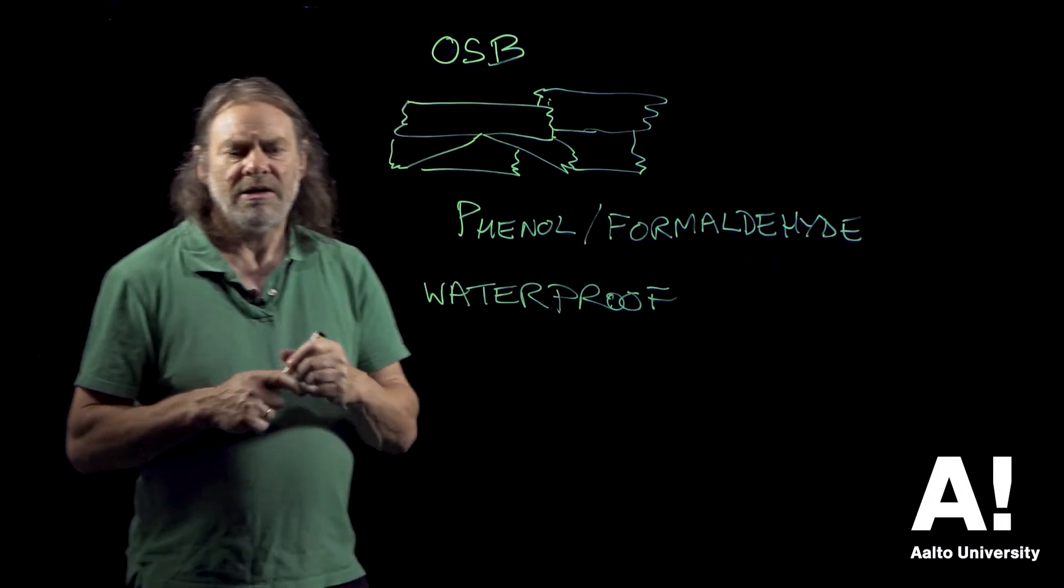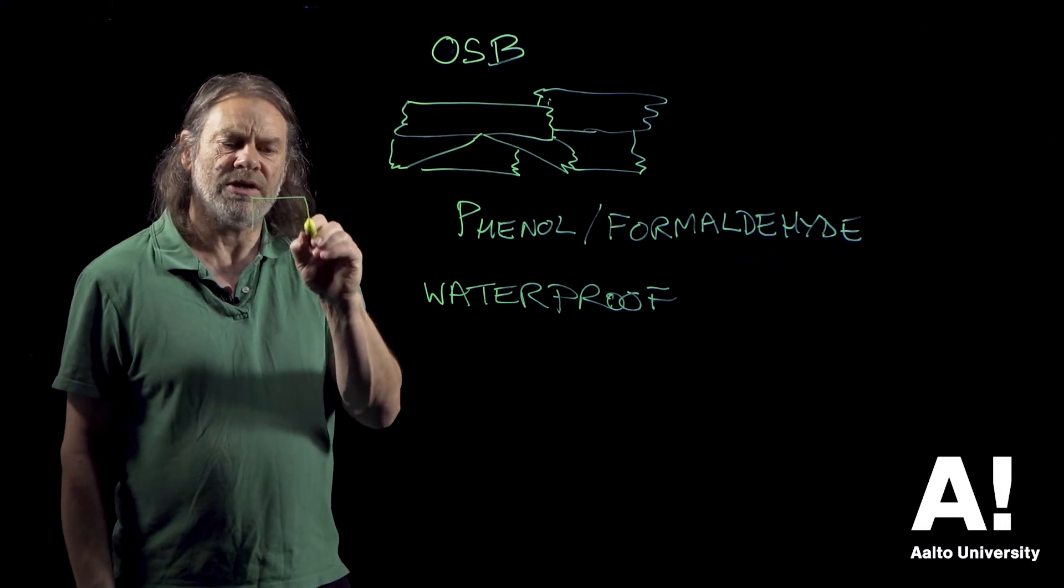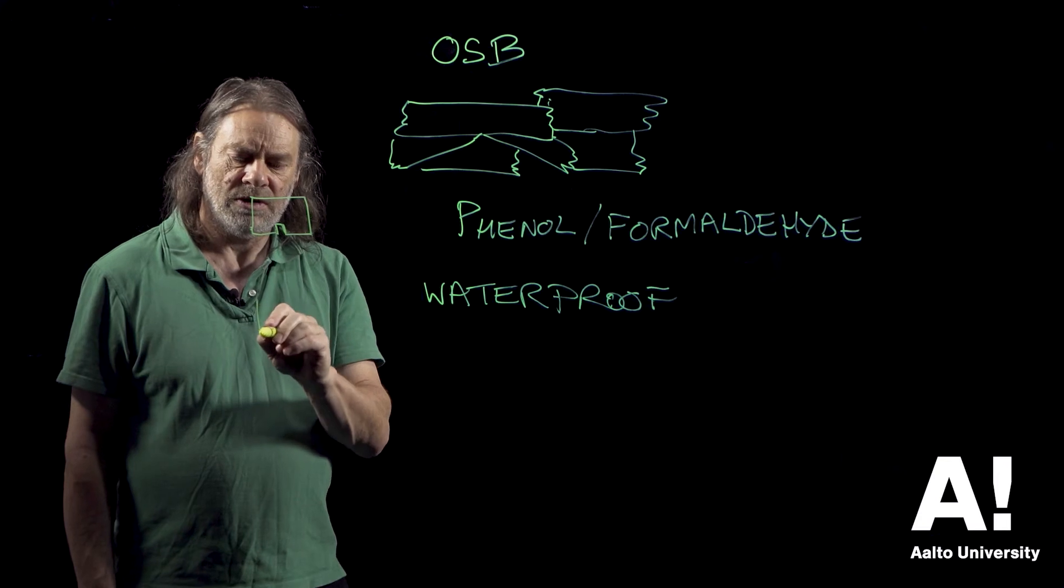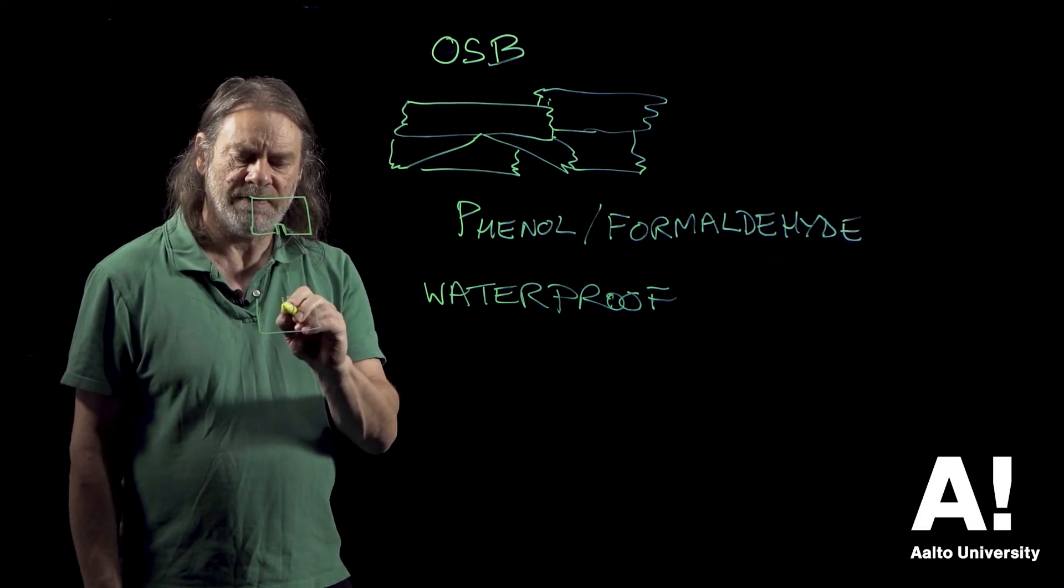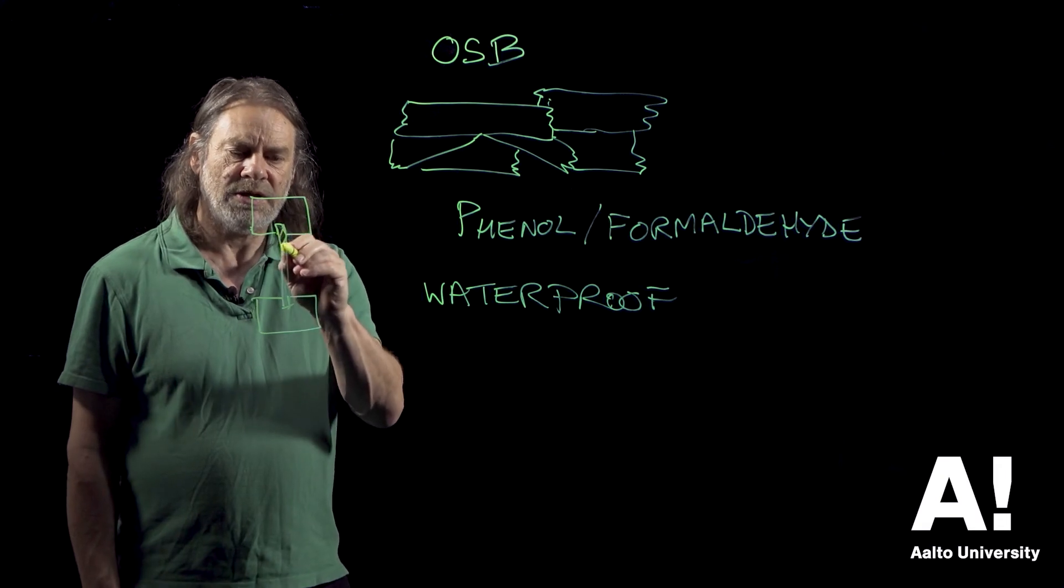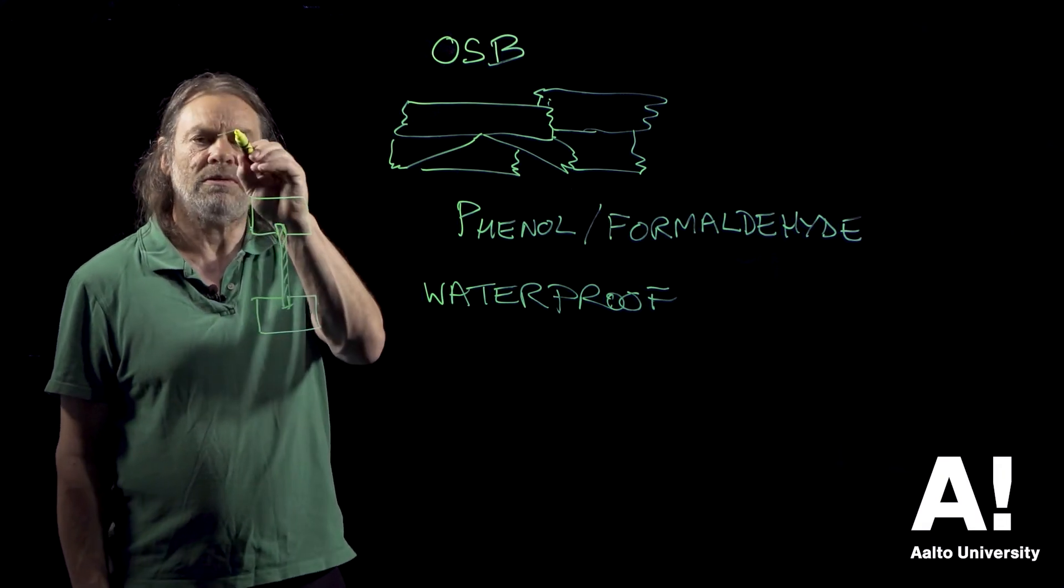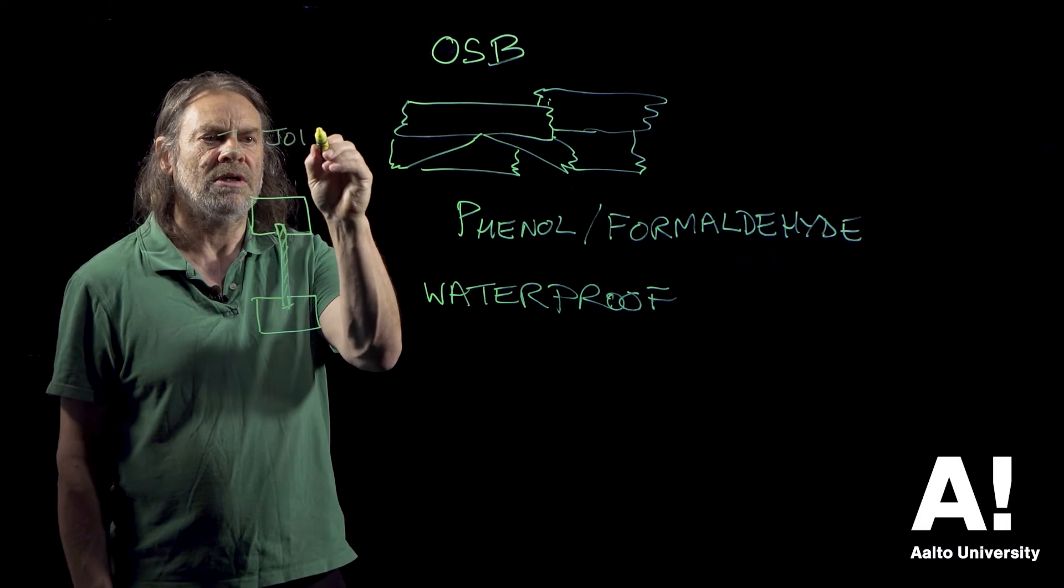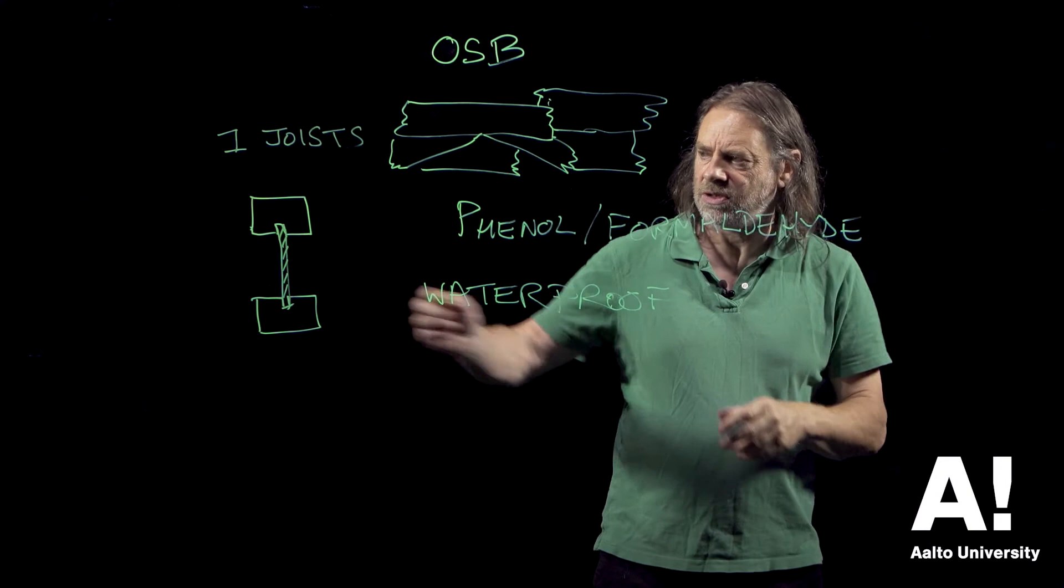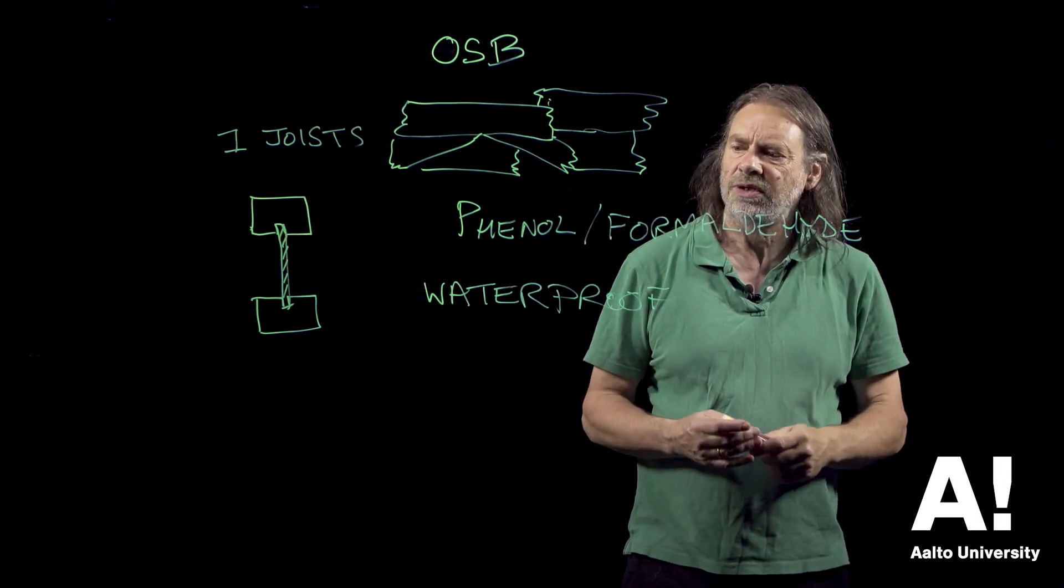There are on the market products which use a wood element top and bottom, and in between there is a piece of oriented strand board. These are called i-joists. I think you can work out why they're called i-joists, and they're used in structural applications in buildings.